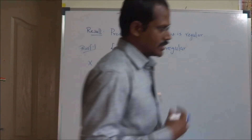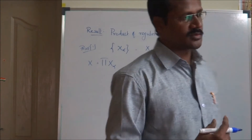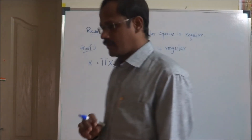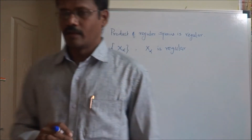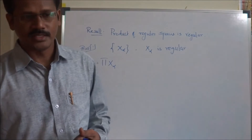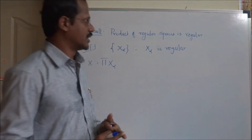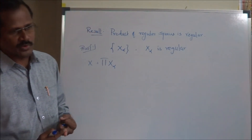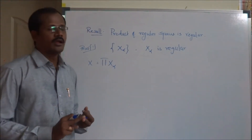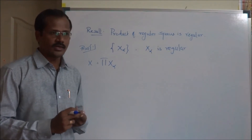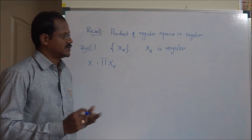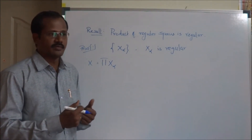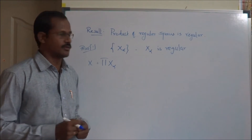Recall the definition of a regular space: a space is regular if every singleton set is closed in that space, and given a point x and a closed set not containing that point, these two can be separated by means of disjoint open sets.